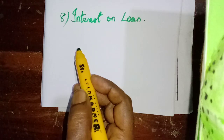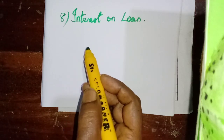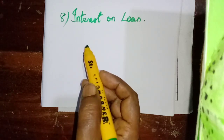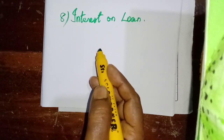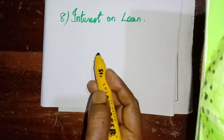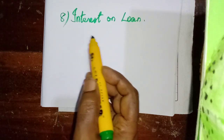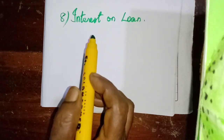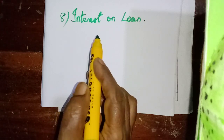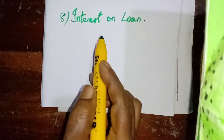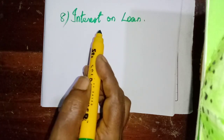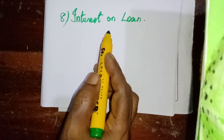In these final accounts, there are 15 adjustments and we have completed around 8. The 8th one is interest on loan. For these adjustments, the first main thing is the adjusting entry. But among the first 7, we have 2 more entries — that means the adjusting entry along with the transfer entry.